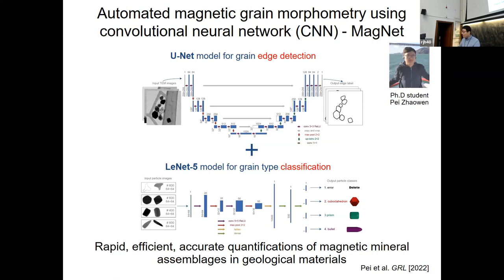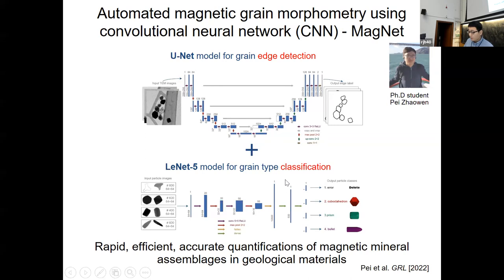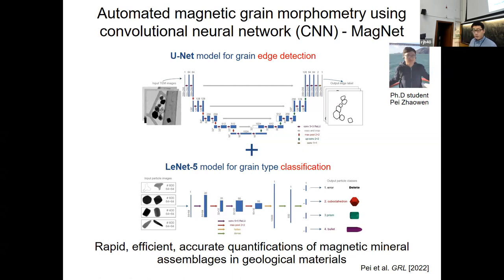The shape and morphology itself tells important environmental information. In the model, we combine two kinds of well-known CNN models: one is for object detection, which captures the shape of particles, and the second model is for particle classification — grouping particles by different shapes. This model is applicable to all sorts of shapes, but we trained it for magnetofossils, which have really well-defined shapes.